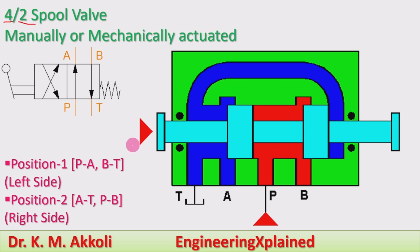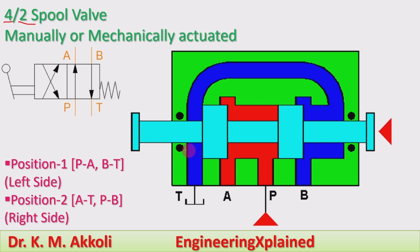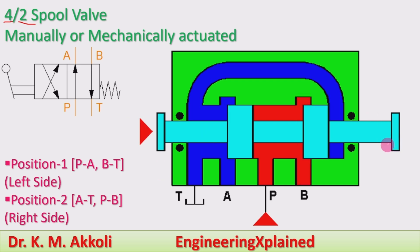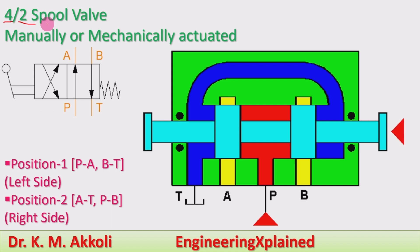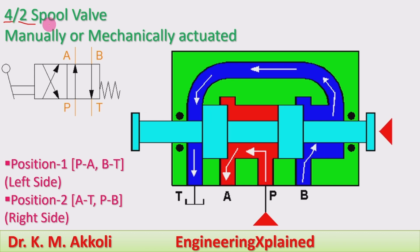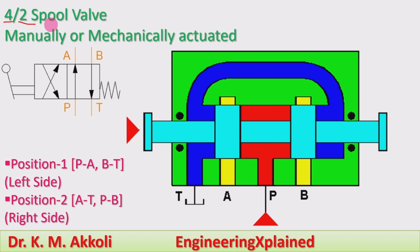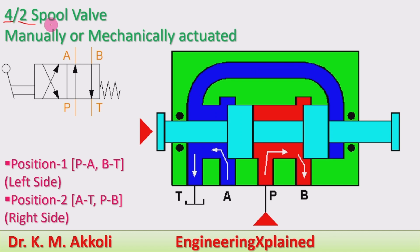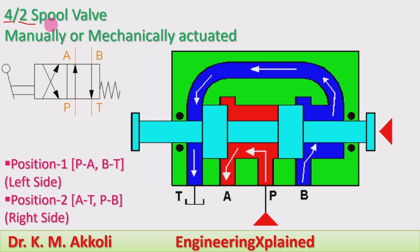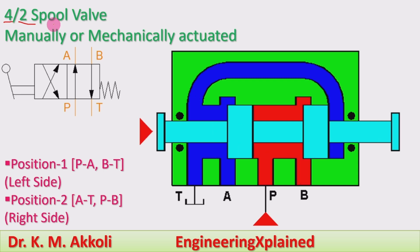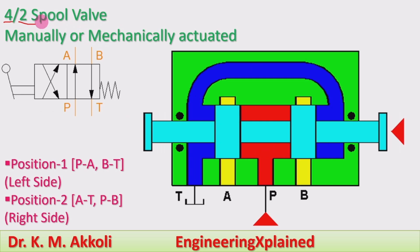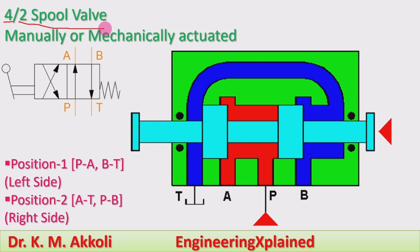The '2' means there are two positions: one is the left position and another is the right position. 'Spool' is the valve element which operates — during its movement it controls the flow of fluid. That is the 4 by 2 spool valve.